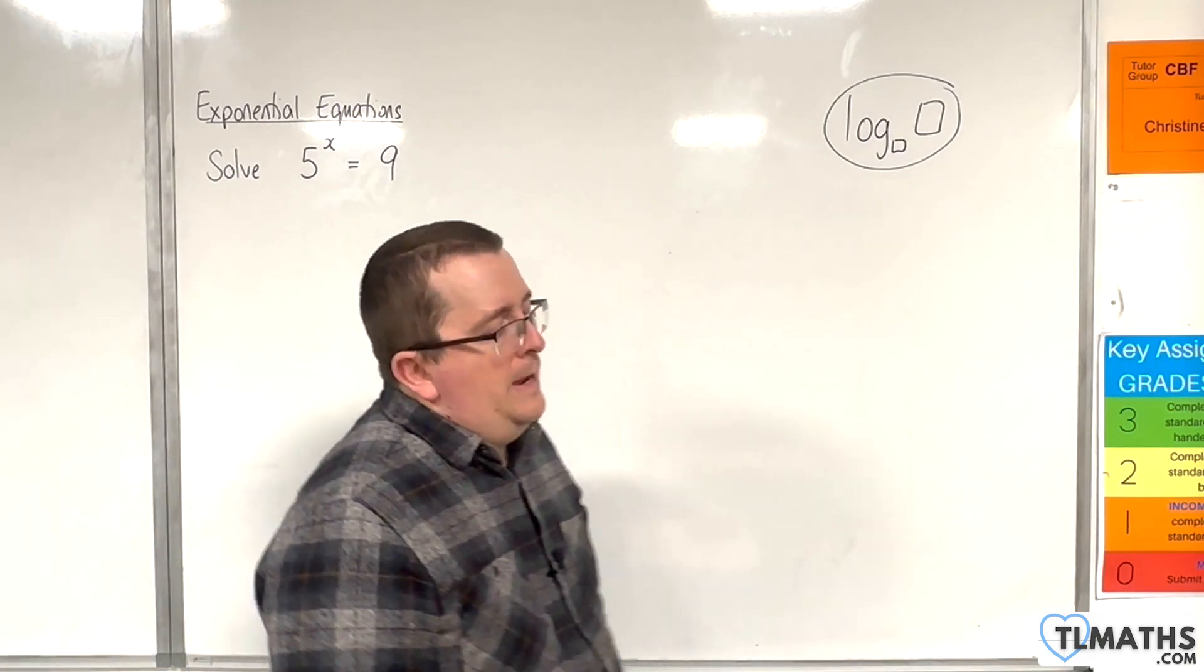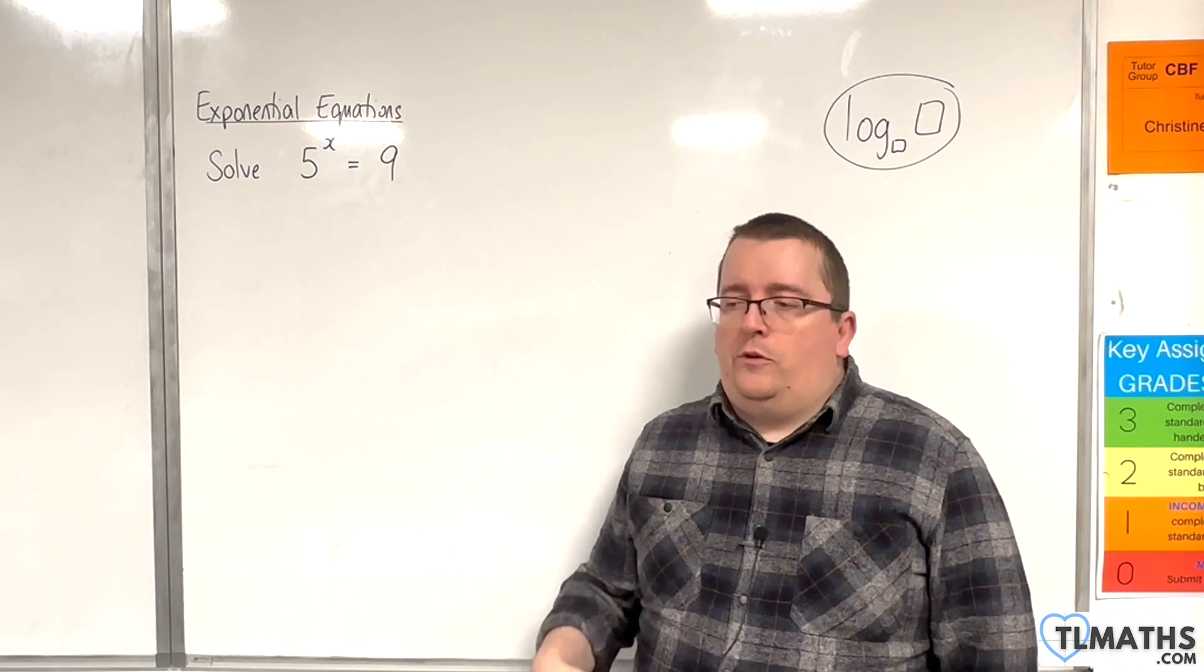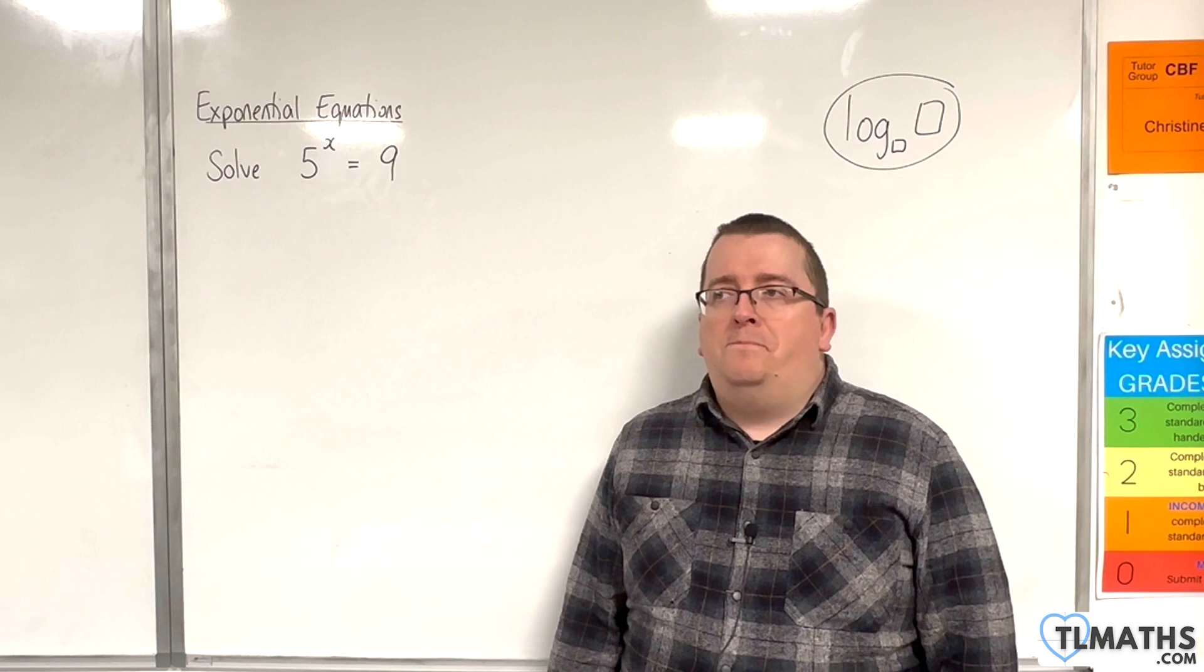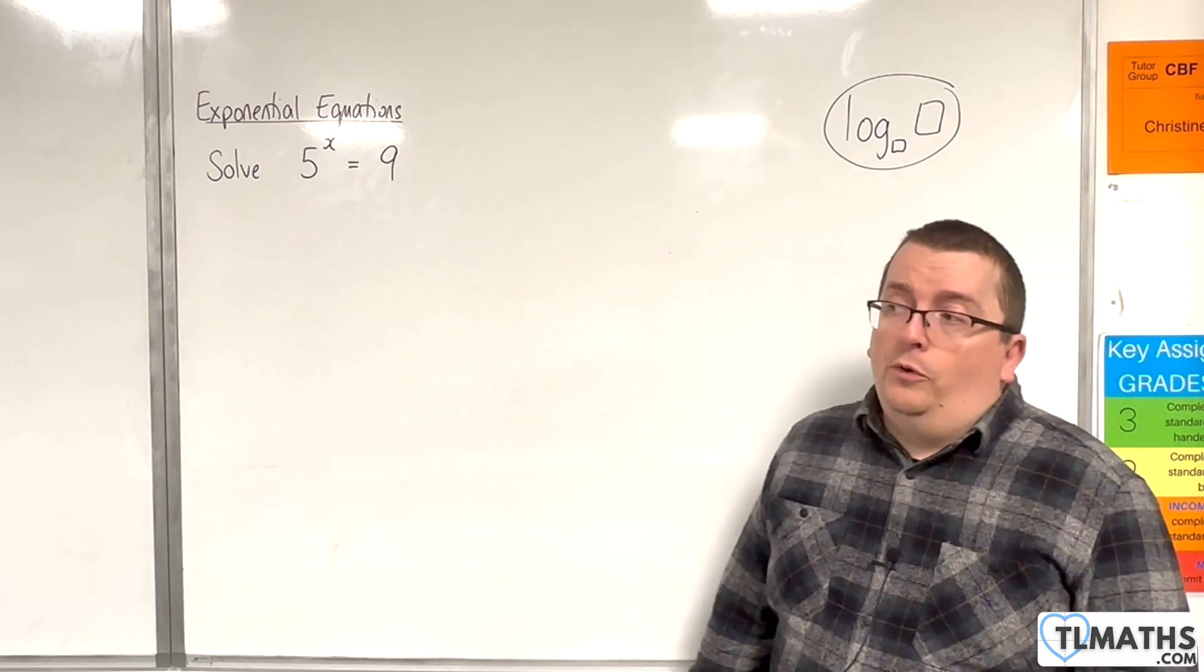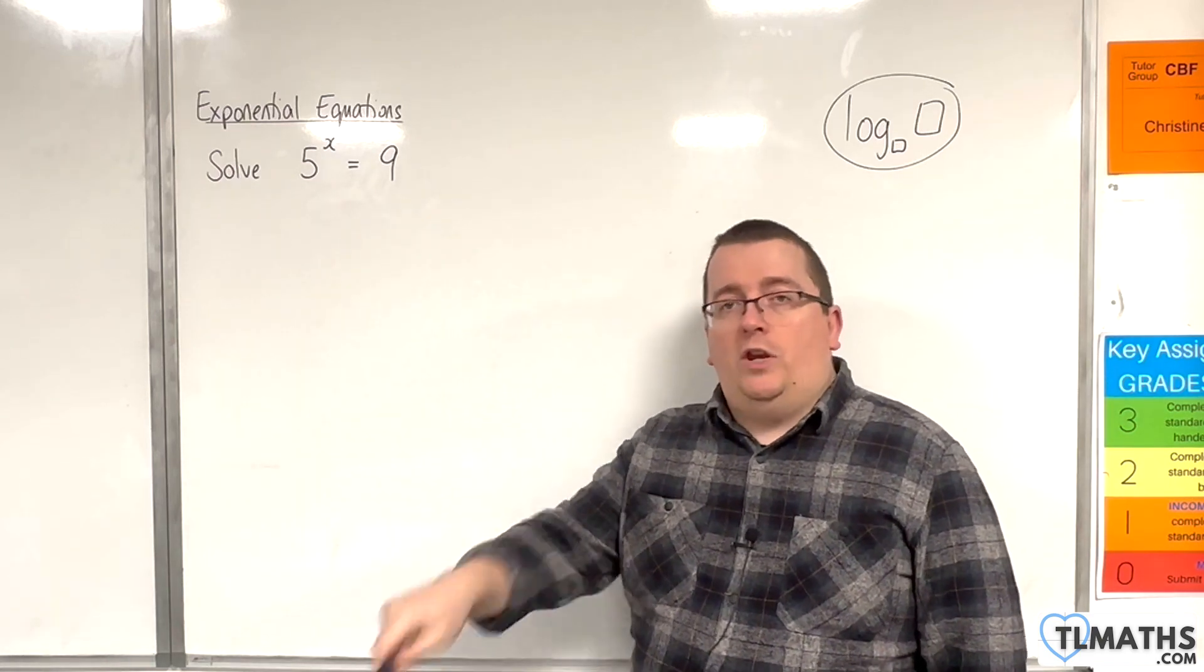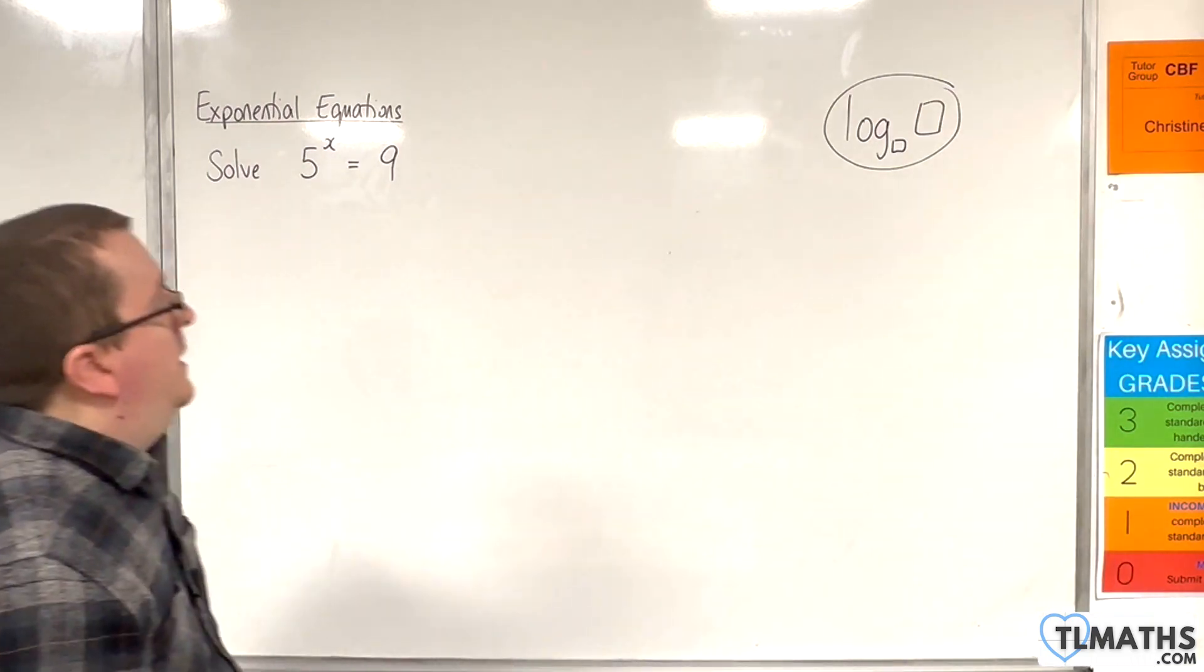So, anyway, I always use natural log if I'm going to take logarithms of both sides, mainly for historical purposes, that's what I was taught. But also, writing LN rather than L-O-G and then a base is just quicker. So, in general, it's just a quicker way of doing it.